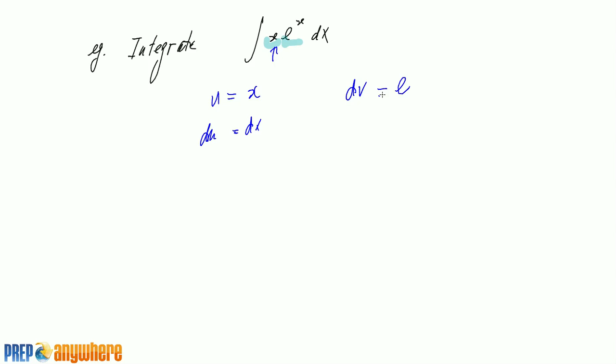Picking dv to be e to the power of x is also nice because integrating that is a simple integration and it doesn't get more complicated. It just stays the same, e to the power of x.